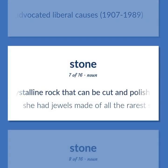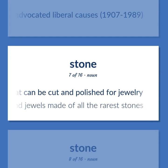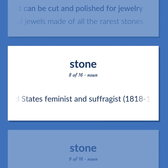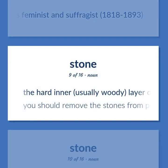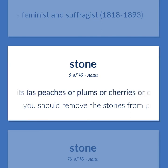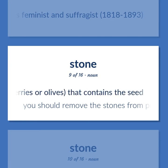A crystalline rock that can be cut and polished for jewelry — she had jewels made of all the rarest stones. The hard inner, usually woody, layer of the pericarp of some fruits, as peaches or plums or cherries or olives, that contains the seed. You should remove the stones from prunes before cooking.